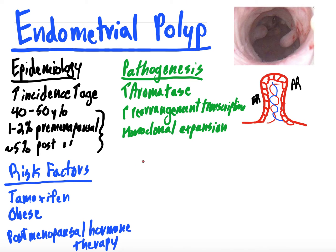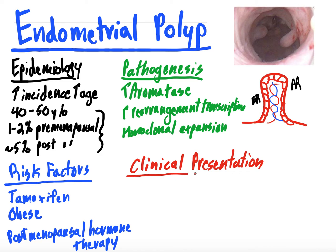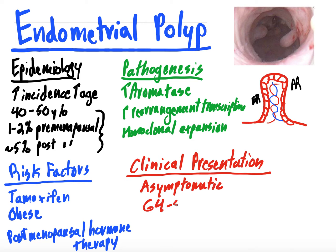So clinical presentation — this is where we get into abnormal uterine bleeding. The vast majority of these patients are actually going to be found incidentally, so the vast majority are asymptomatic. Many people can have endometrial polyps but won't have any symptoms. But about 64 to 88% of patients with endometrial polyps will have abnormal uterine bleeding — menorrhagia, breakthrough bleeding, heavy bleeding — though primarily it is just spotting.